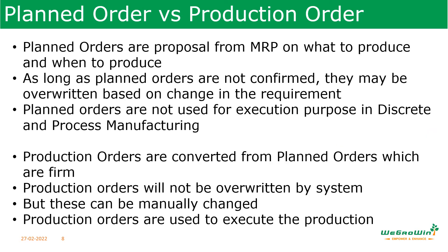Let us understand the difference between planned orders and production orders. Planned orders come from MRP indicating what to produce and when. As long as planned orders are not confirmed, they may be overwritten by an MRP run based on changes in requirements, and they are not used for execution in discrete manufacturing or process industries — in those cases they are converted into production or process orders. In repetitive manufacturing, planned orders are used for execution directly. Production orders, converted from firm planned orders, will not be overwritten by the system; any changes must be done by users, and they are used to execute production.